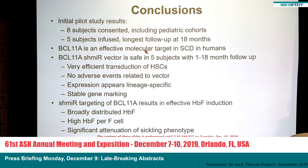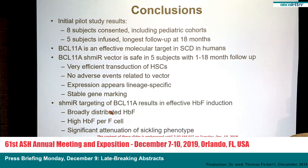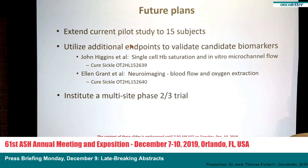We have an initial pilot study with eight subjects consented, including pediatric patients. Five patients have been infused with the longest follow-up of 18 months. We've shown that BCL11A is a very effective molecular target, that our shmiR vector is safe with very efficient transduction of stem cells and no adverse events related to the vector. Expression is only in red cells as designed, and we have stable gene modification over a long period of time. The shmiR works very well — there's broadly expressed hemoglobin F with a high amount of F per F-cell and significant attenuation of the sickling phenotype. We've received IRB and NIH approval to expand this pilot trial to 15 subjects, we're adding additional biomarkers, and we're expanding this into a multi-site phase two to three study with NIH funding.